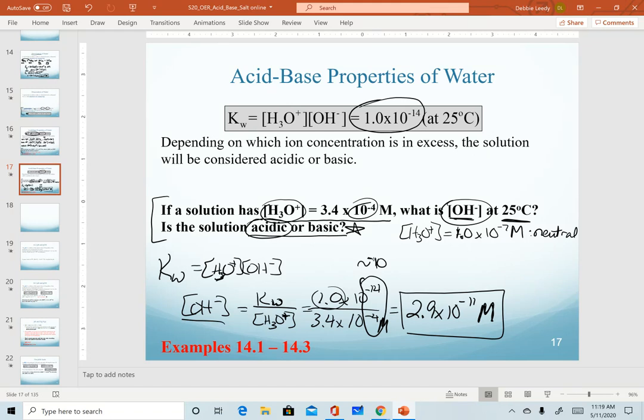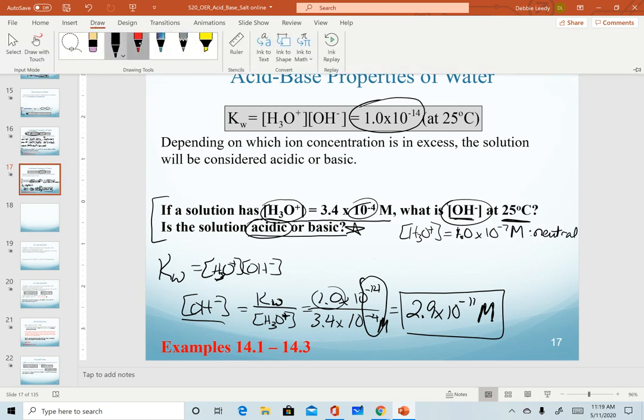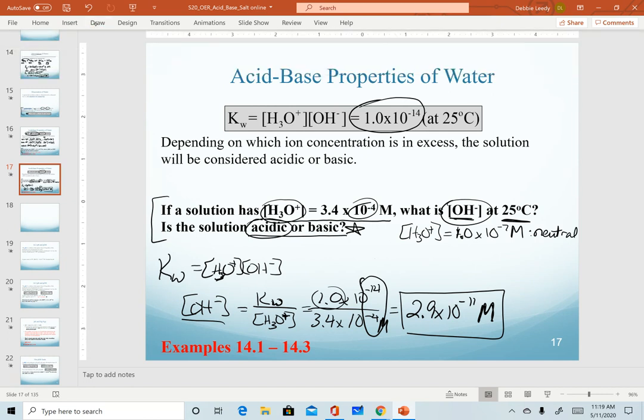And so now we can compare. I'll do my last step in a different color here. We know our hydronium concentration is 3.4 times 10 to the minus 4. Our calculated hydroxide concentration is 2.9 times 10 to the minus 11. And here we clearly see that hydronium is greater than hydroxide. And so therefore, we have an acidic solution.